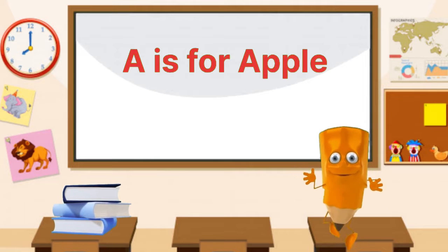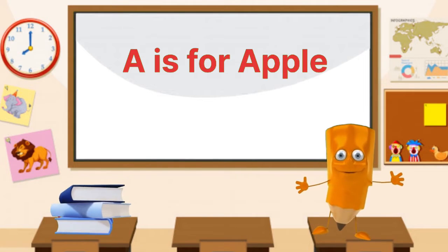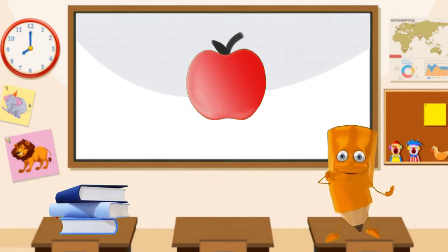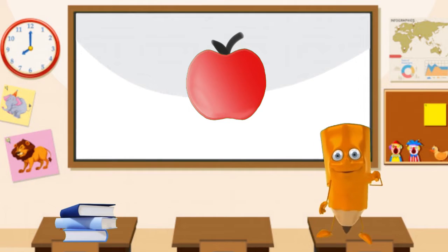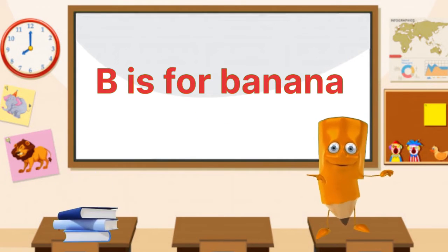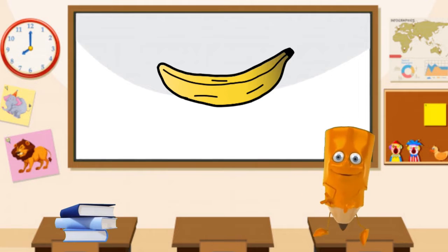A is for apple. A, A, apple. B is for banana. B, B, banana.